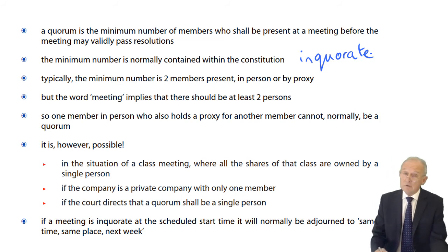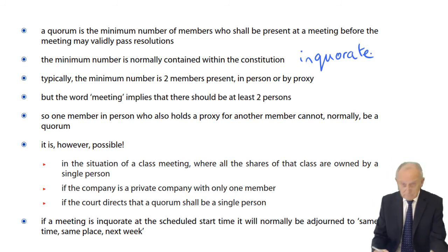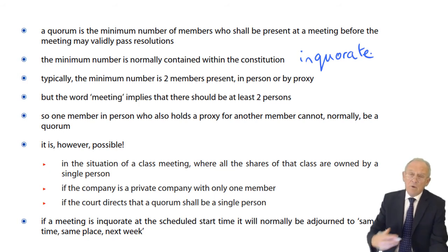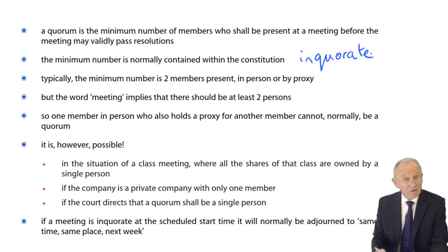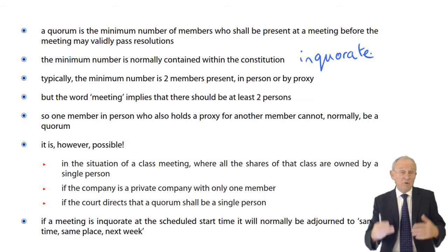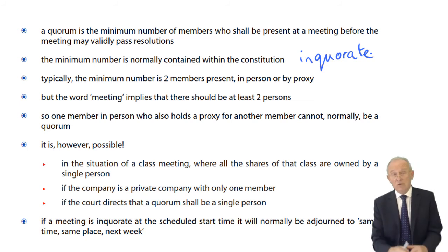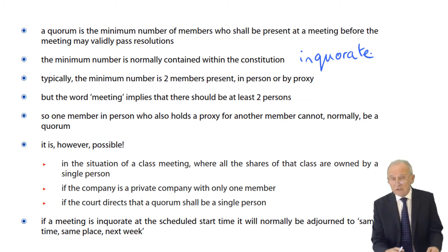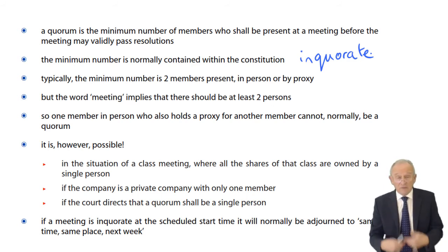The meeting is adjourned for a week — same time, same place, next week. And if there is still no quorum, it adjourns again for another week. Then however many members are present at that adjourned meeting will constitute a quorum, even though it's less than what the constitution specifies — so the meeting can go ahead and discuss the business.